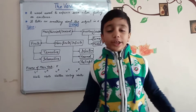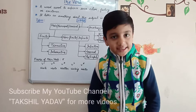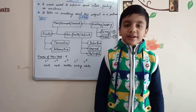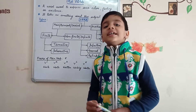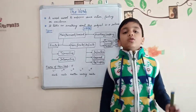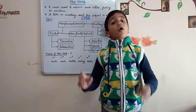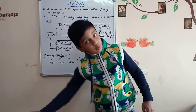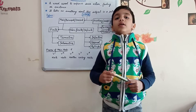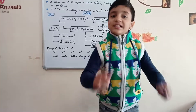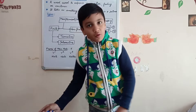First of all, listen to these sentences carefully. Takshil reads a book. Mayra writes a novel. In these sentences, the words 'writes' and 'reads' tell us about the happening of an action. In the sentence 'Takshil reads a book', the word 'reads' tells us about the happening of the action of reading a book. And in the sentence 'Mayra writes a novel', the word 'writes' tells us about the happening of the action of writing a novel.